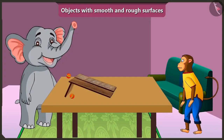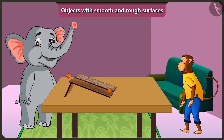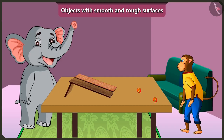Yes, now I understood. The ball rolls faster on this wooden slope because this slope has a smooth surface. And the ball rolls slowly on this slope because this slope has a rough surface. Well done, Appu!